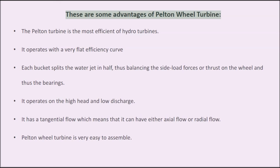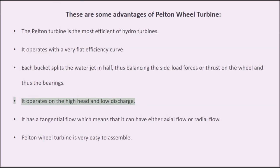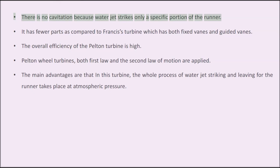Advantages of the Pelton wheel turbine: the Pelton turbine is the most efficient of hydro turbines and operates with a very flat efficiency curve. Each bucket splits the water jet in half, thus balancing the side load forces or thrust on the wheel and the bearings. It operates on high head and low discharge. It has a tangential flow, which means it can have either axial flow or radial flow. The Pelton wheel turbine is very easy to assemble. There is no cavitation because the water jet strikes only a specific portion of the runner. It has fewer parts compared to Francis turbine, which has both fixed vanes and guided vanes.